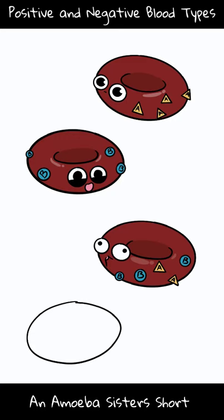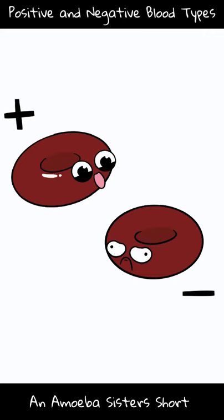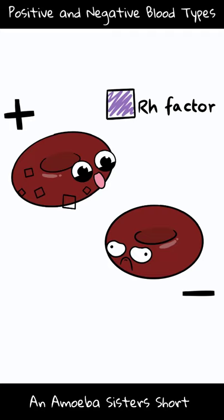However, blood types can also be positive or negative. It means they can have another antigen, a protein antigen, called RH factor on the surface of their red blood cells. Positive blood types have RH factor; negative blood types do not have RH factor.